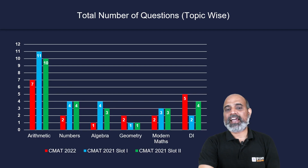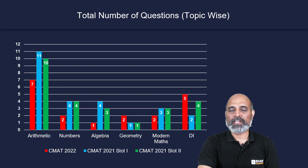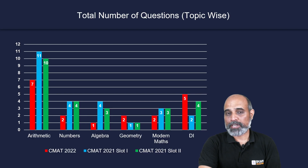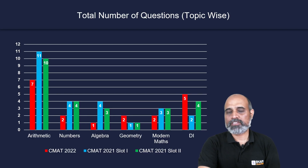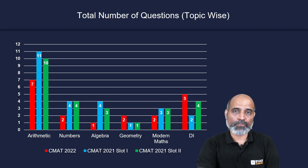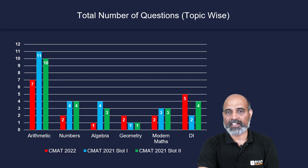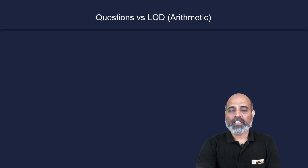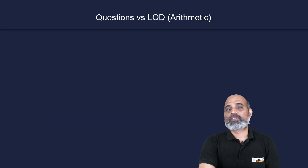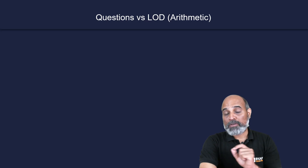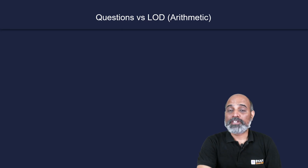You can see that question counts have been variable. When there were two slots in CMAT 2021, some topics had equal numbers of questions across slots, while others varied. Now, looking topic-wise into arithmetic specifically: